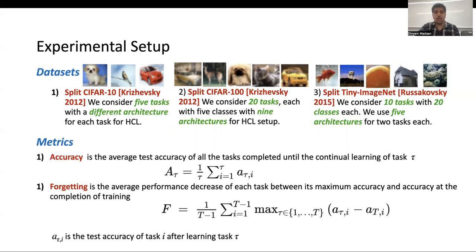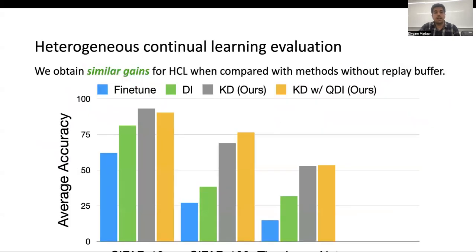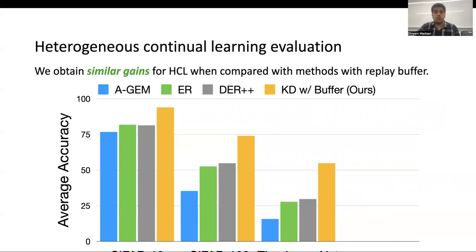We evaluate on two popular metrics — accuracy and forgetting — where accuracy is the average accuracy of tasks completed until continual learning of tasks tau, and forgetting is the average performance decrease of each task between the maximum accuracy and the accuracy at the completion of training. We first compare Knowledge Distillation and Knowledge Distillation with QDI, two methods that do not use prior task information, with fine-tuning and Deep Inversion. Both methods obtain much better performance than prior methods that do not use buffer. We also show comparison with methods that use buffer — AGM, ER, and DER++. Including a buffer with our method, we can see that our method obtains much better performance than all these methods.